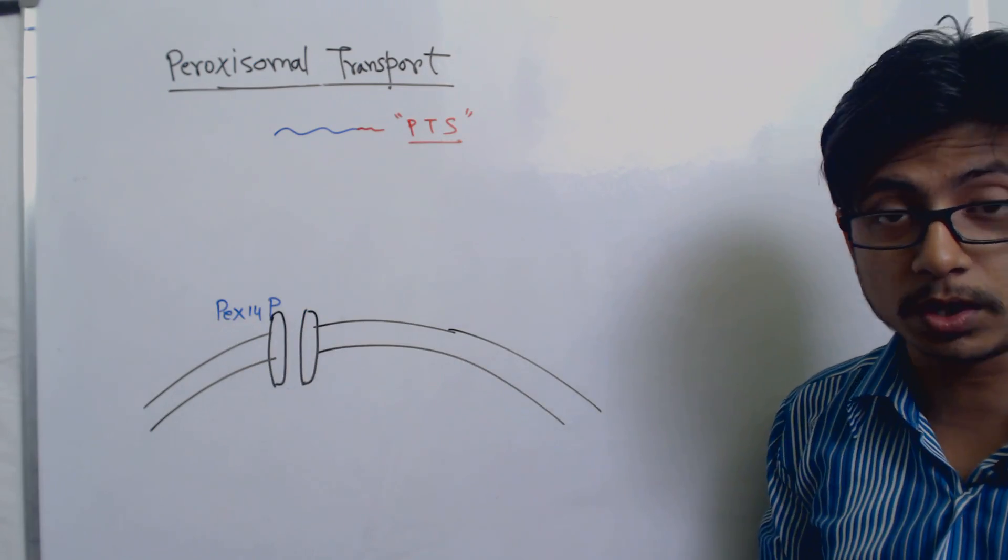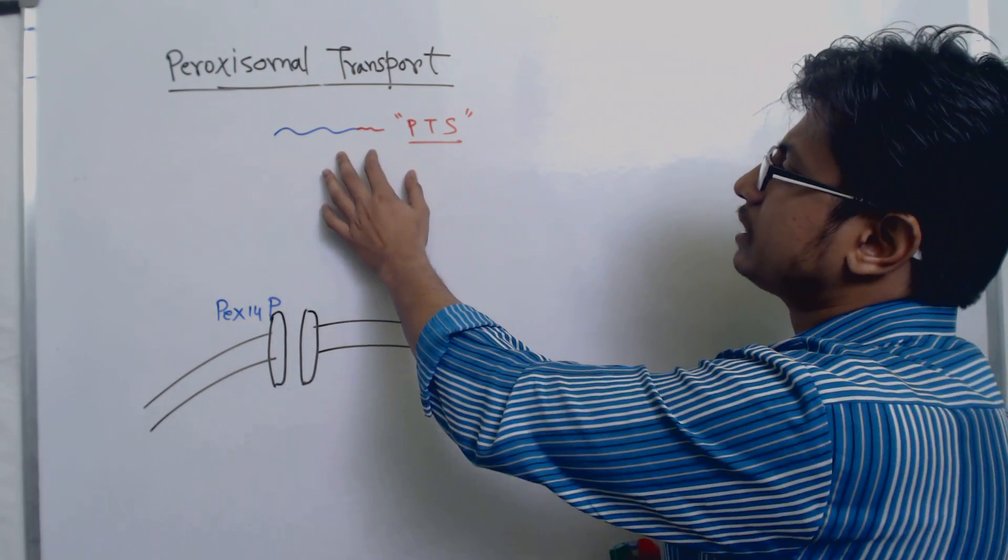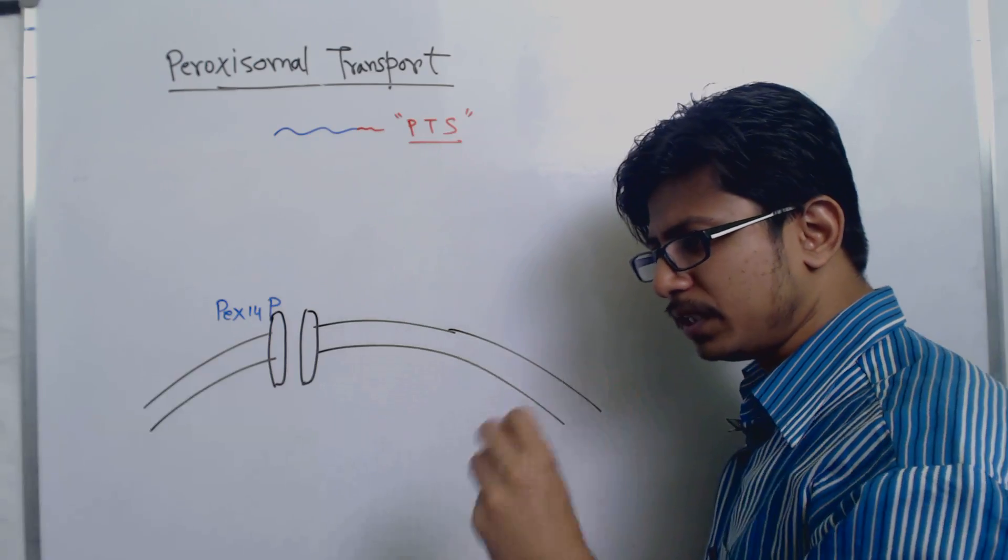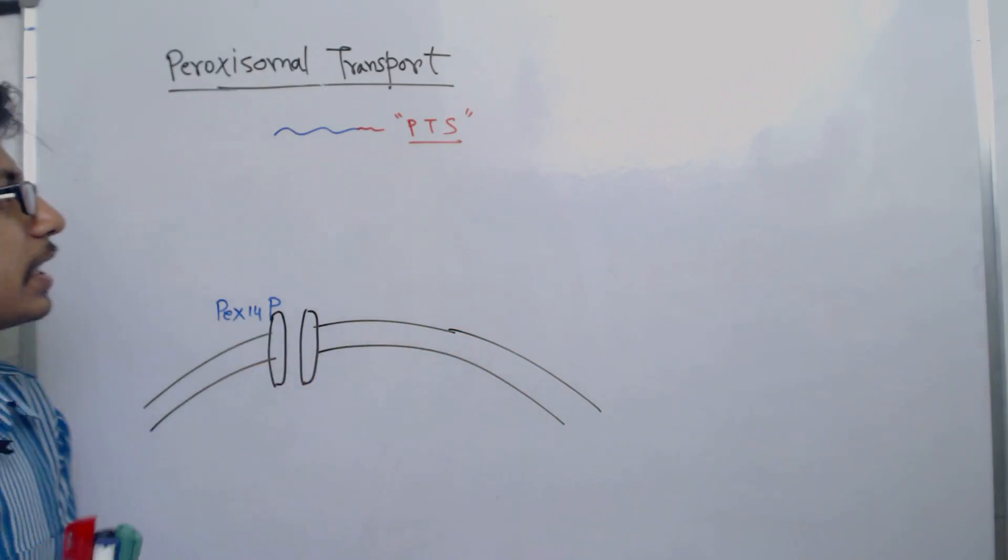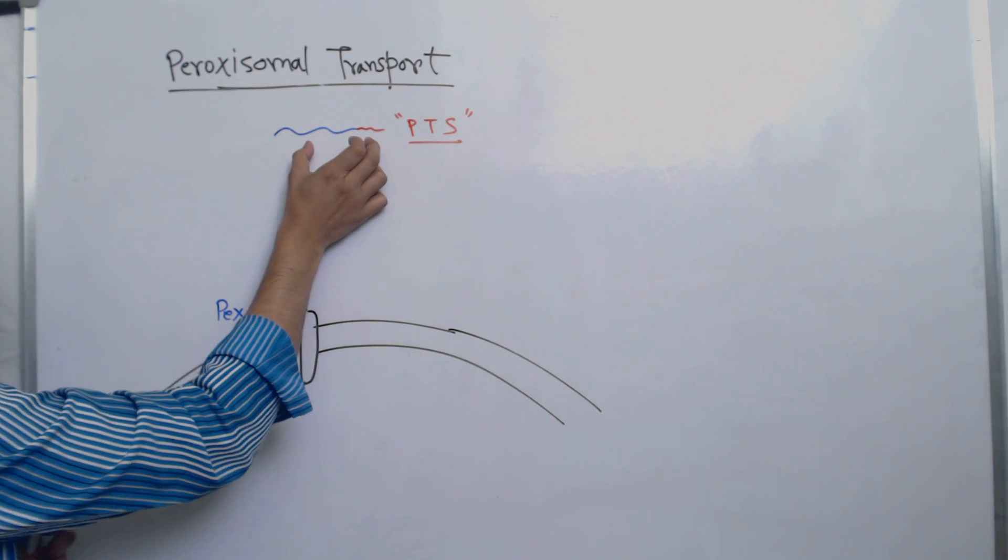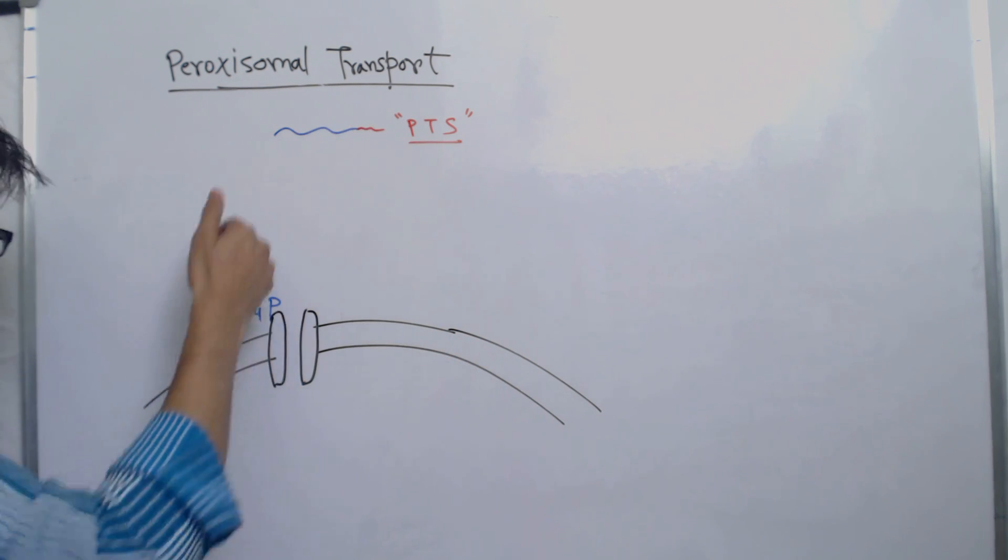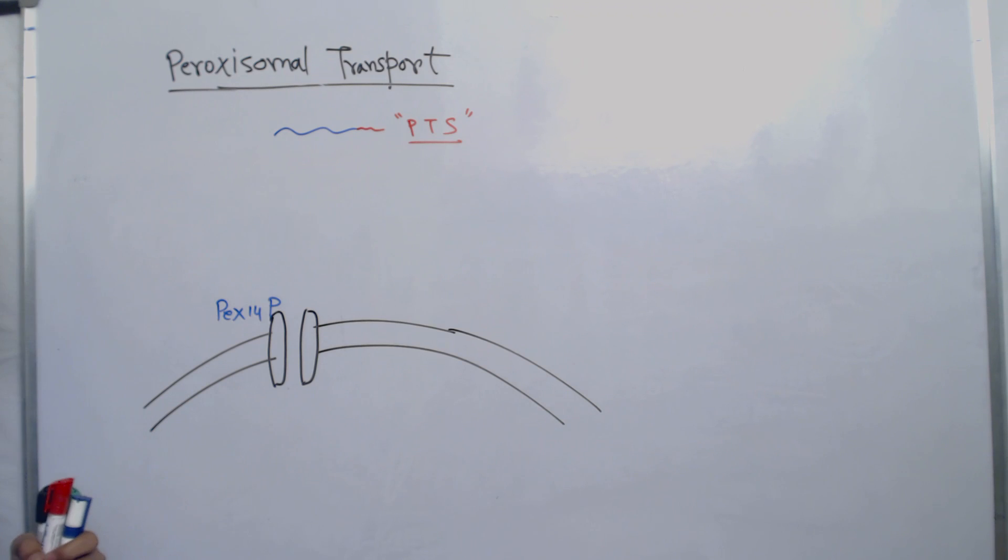The PTS contains PTS receptor proteins. These PTS receptor proteins can properly interact with the PTS region of the target polypeptide and can bring it inside.